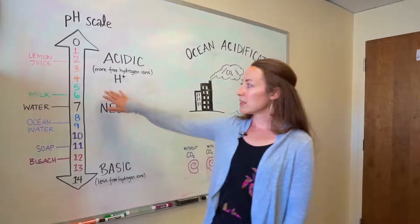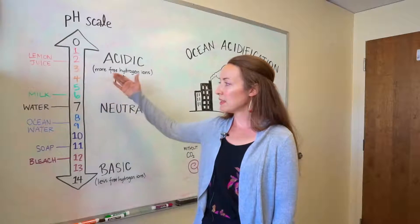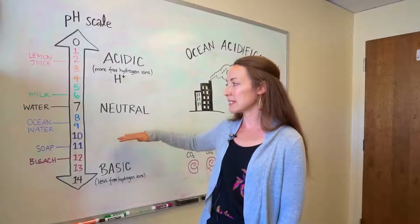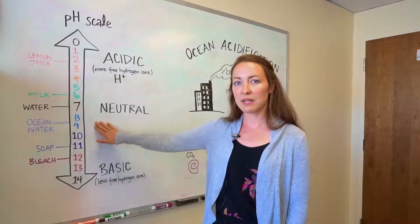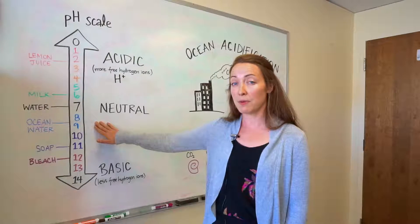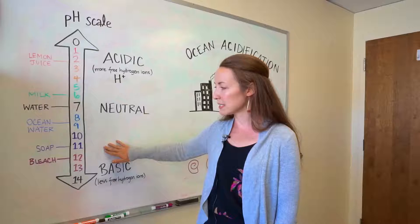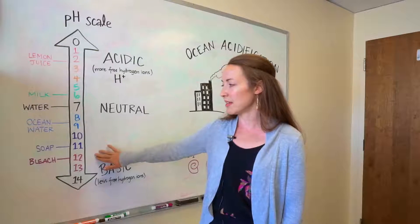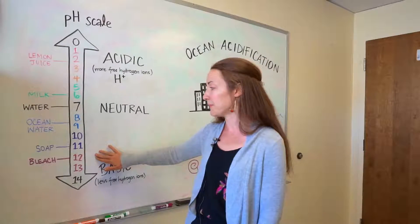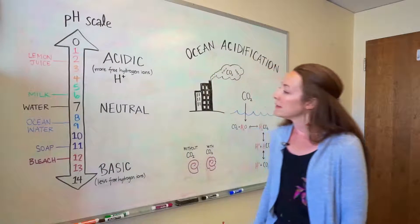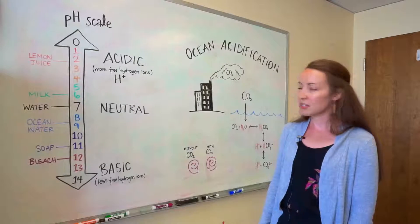Some household examples to orient you with the scale: lemon juice is really acidic with a pH of about 2, milk has a pH of about 6. Moving to the basic side, ocean water has a pH of about 8.1, soap has a pH of 11, and bleach has a pH of 12. So that's the pH scale.